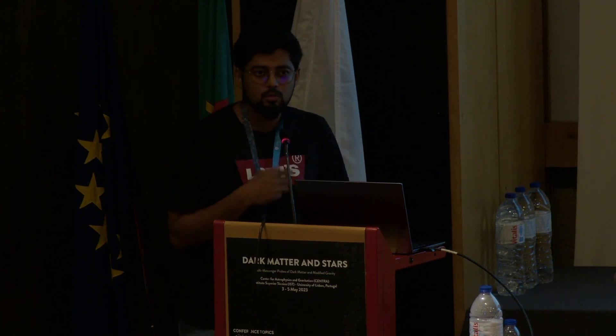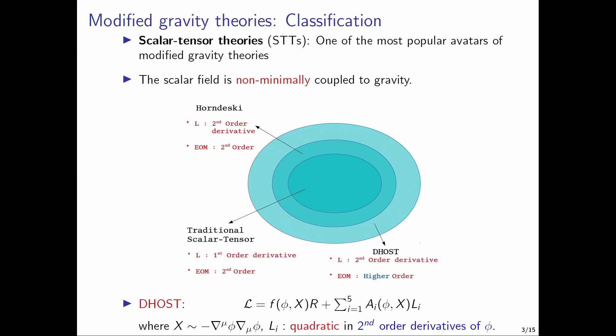Out of different kinds of modified gravity theories, one of the most popular and widely studied ones are the scalar tensor theories where the scalar field is non-minimally coupled to gravity. These scalar tensor theories can be broadly classified into three categories with the degenerate higher order scalar tensor theories, abbreviated as DHOST, being the most general one. We will be considering these DHOST theories for our analysis where the Lagrangian takes this particular form with the non-minimal coupling appearing here.